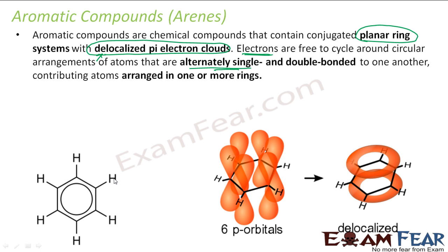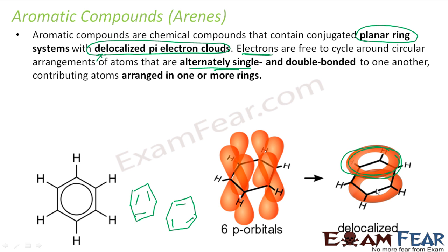Benzene is an example of an aromatic compound — it can be drawn in more than one structure, and we draw a ring to show that electrons are free to move around. Each carbon has a p orbital forming a ring with a dense electron cloud. The more resonating structures you can create, the more stable the compound. With delocalized electrons free to roam, aromatic compounds have extra stability.